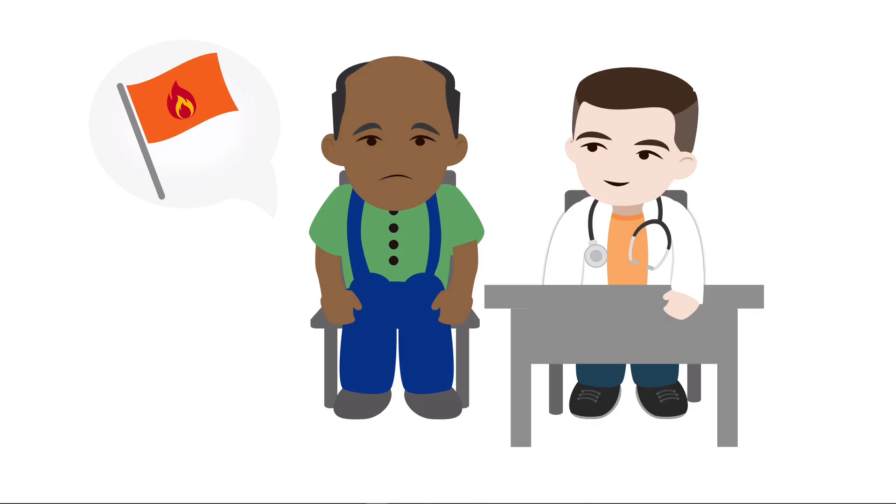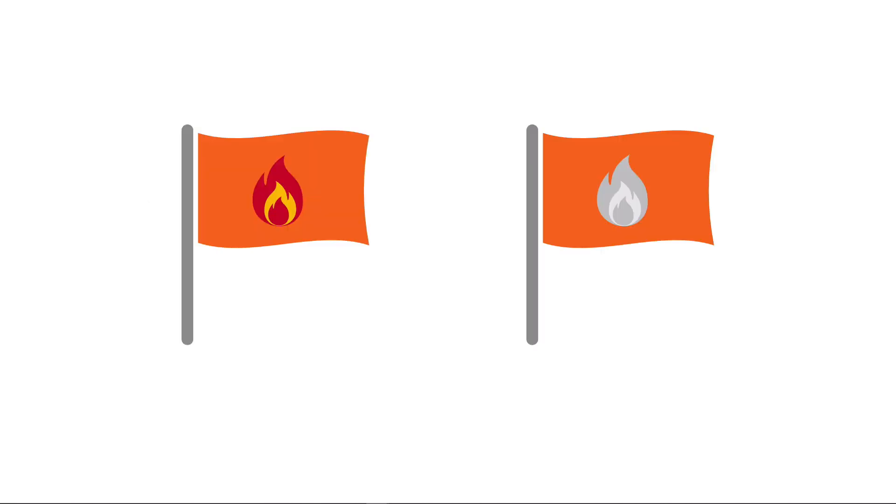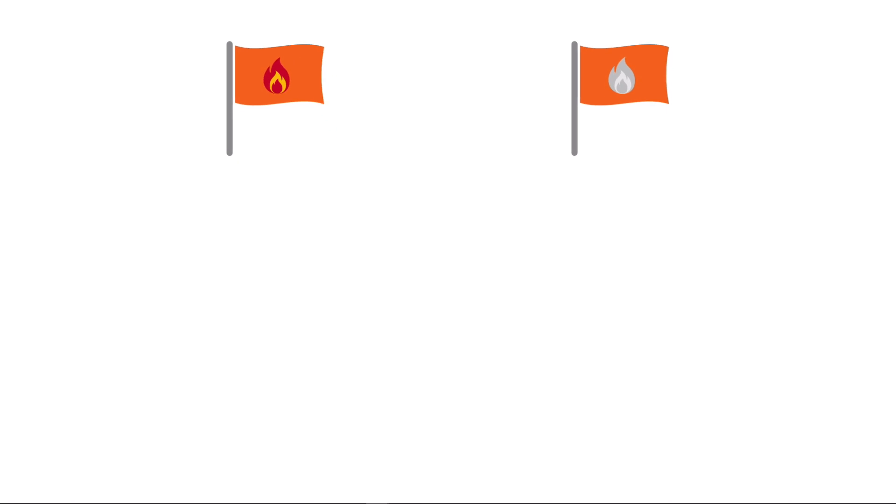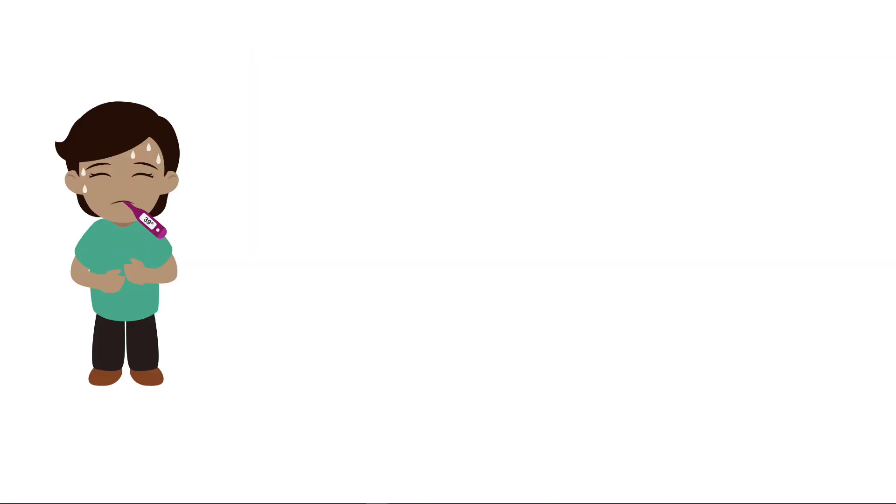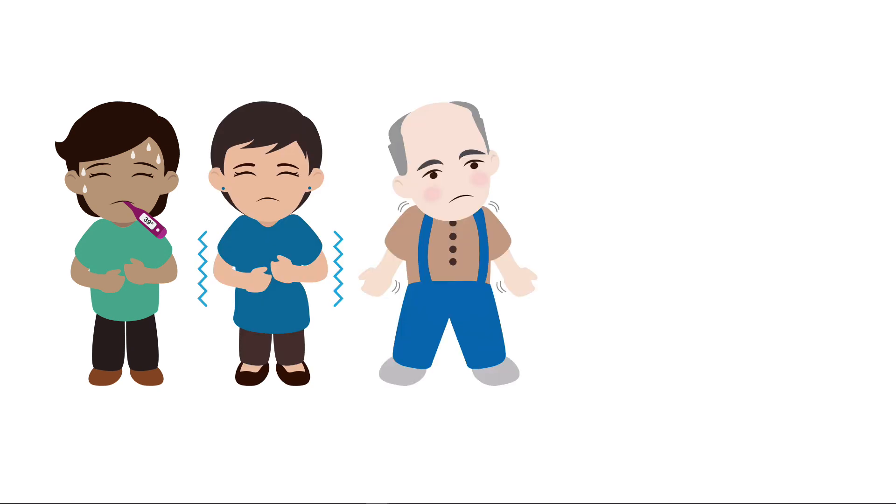Systemic inflammatory markers in the history can help distinguish between inflammatory and non-inflammatory conditions, such as pneumonia and congestive heart failure. The presence of fevers, chills, and rigors would suggest inflammatory processes.